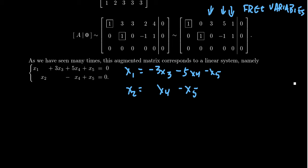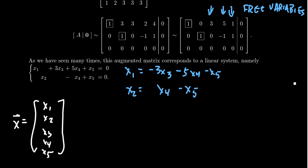So we solved this system and we have these free variables in play. If we look at the general solution to this homogeneous system, this is the vector x which has five components: x1, x2, x3, x4, and x5. What we've learned is that x3 is a free variable so it can be whatever it wants, and same thing with x4 and x5. x1 and x2, on the other hand, are dependent variables, and we have to use the assignments from above.